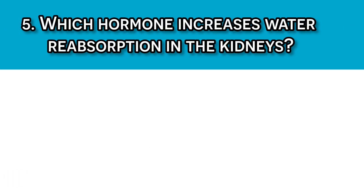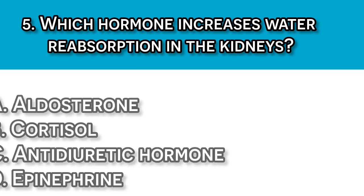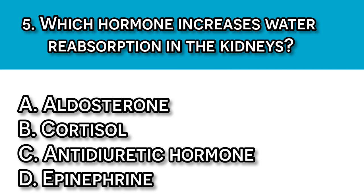Question number five: Which hormone increases water reabsorption in the kidneys? A. Aldosterone, B. Cortisol, C. Antidiuretic hormone, D. Epinephrine. The answer should be C, the antidiuretic hormone, or ADH. ADH promotes water reabsorption in the collecting ducts, which aids in concentrating the urine.